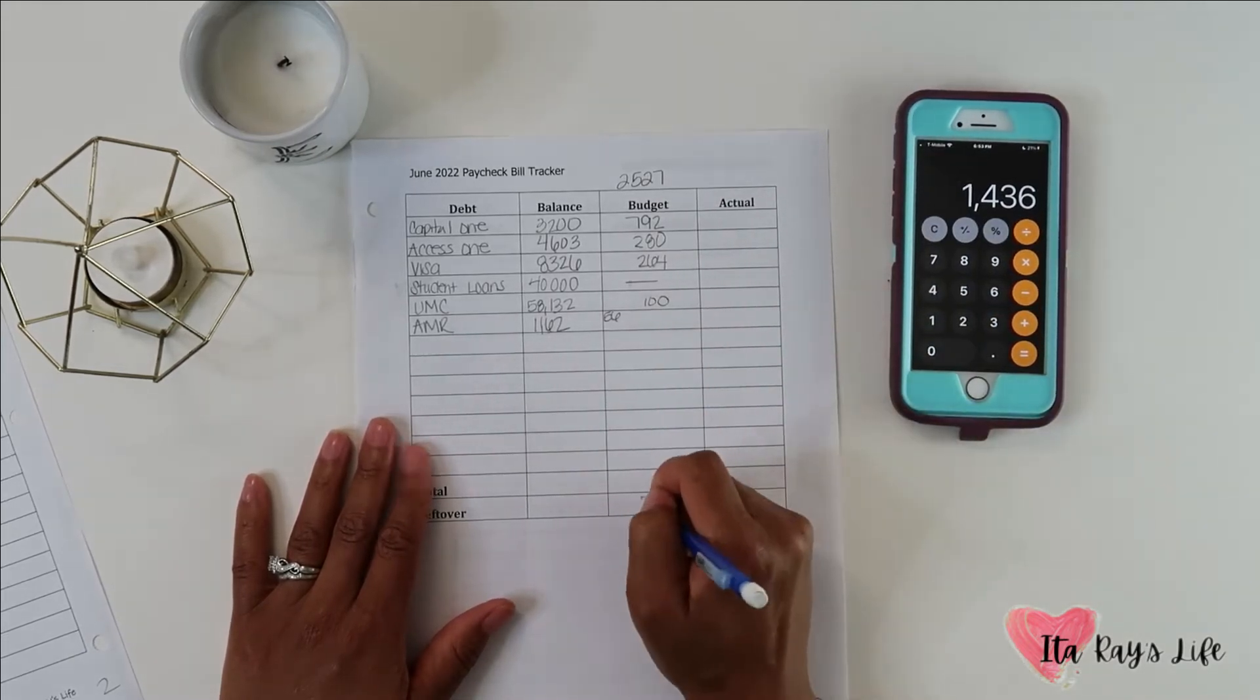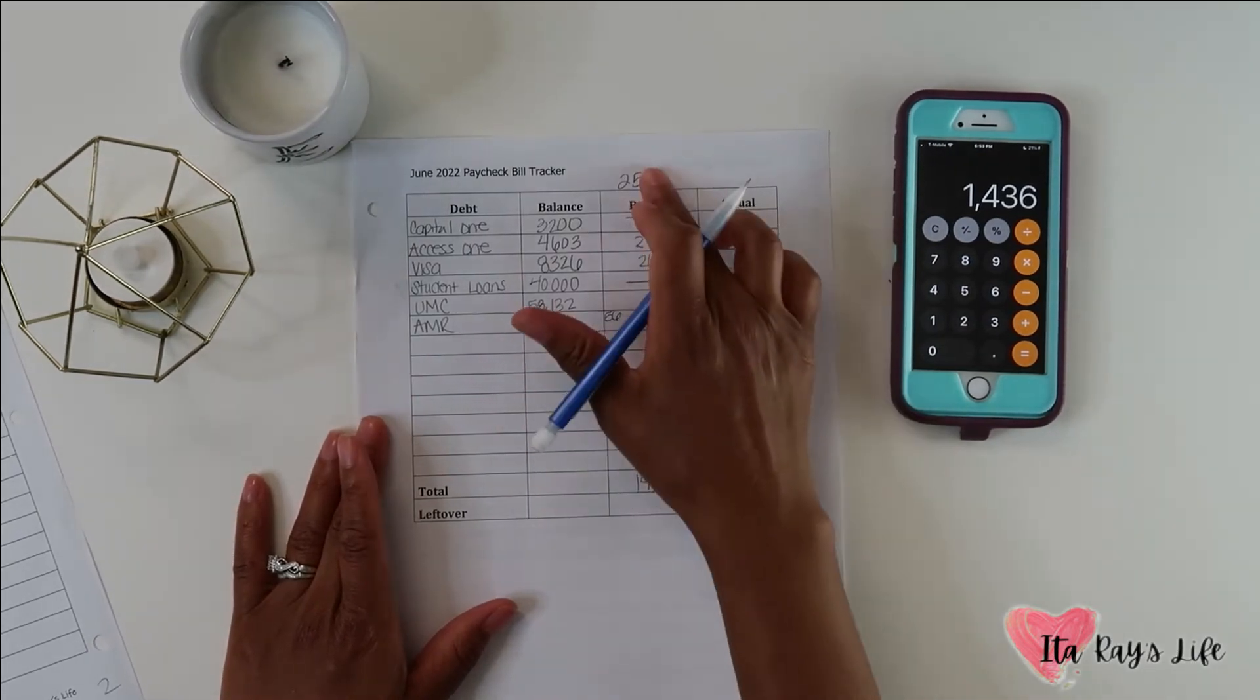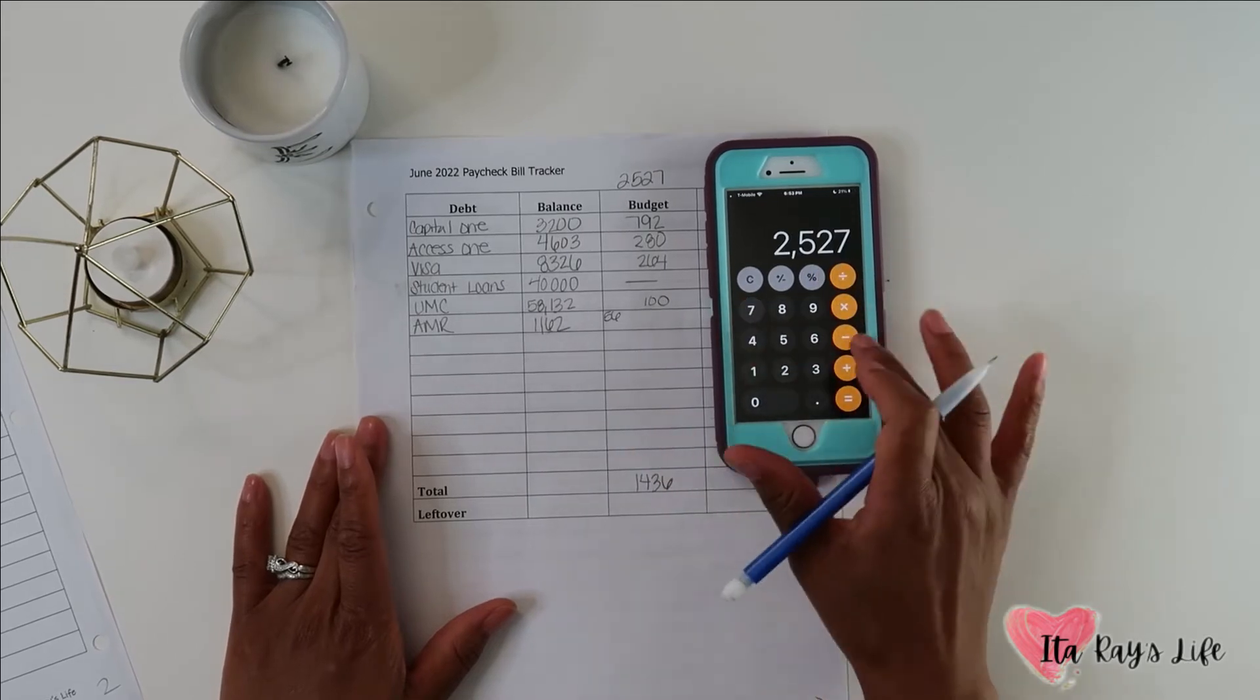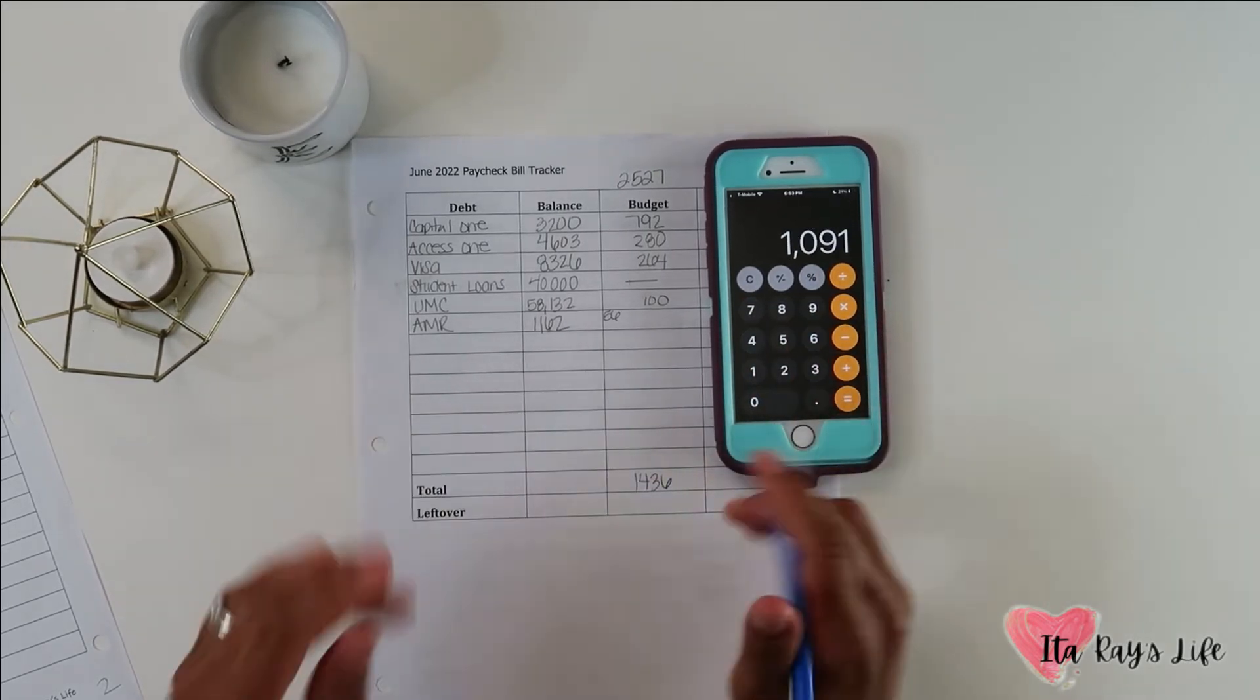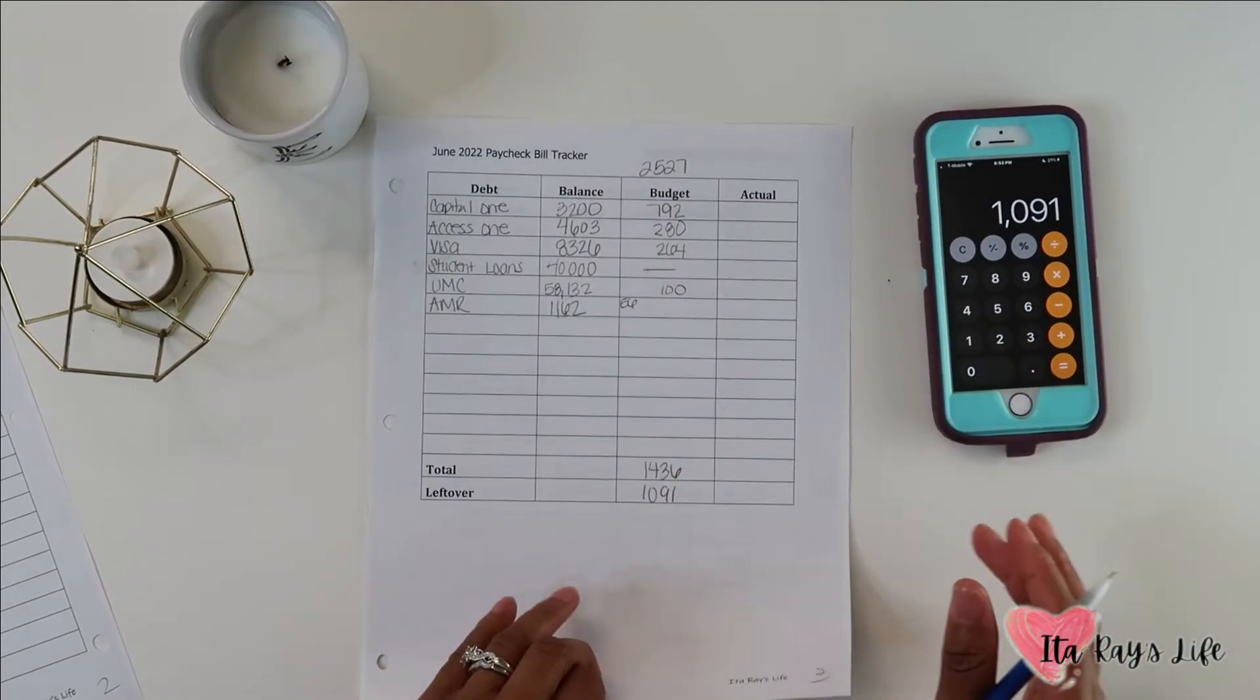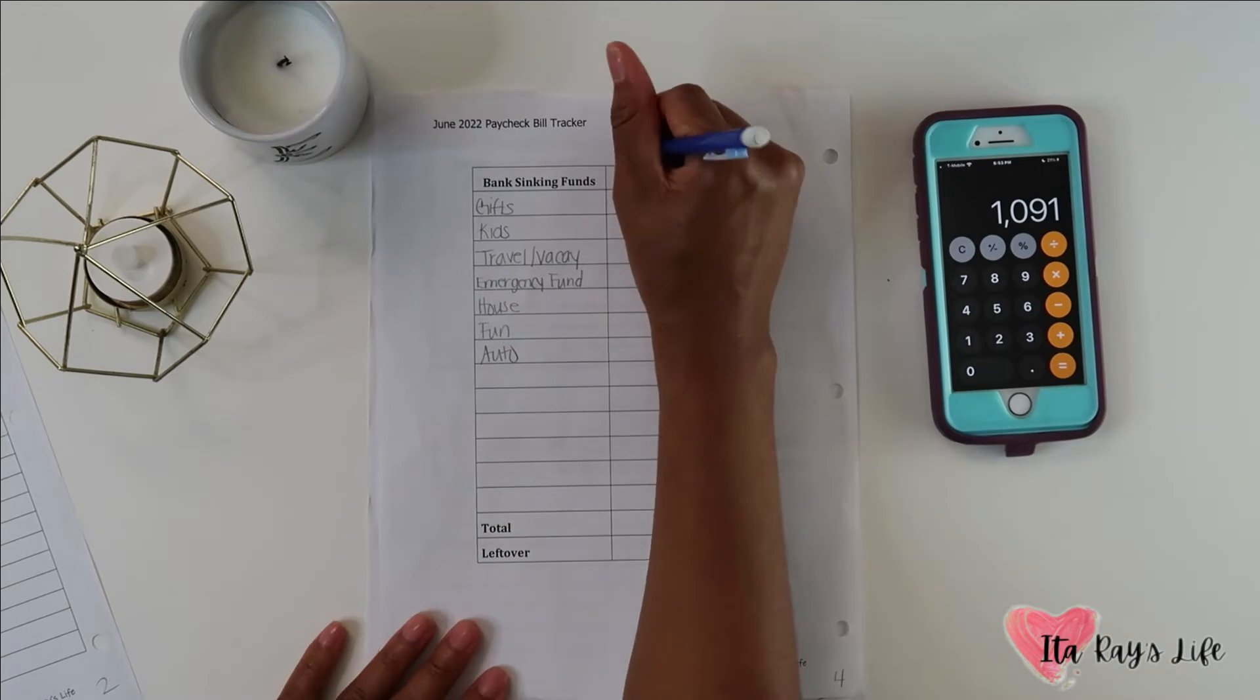That gives us a total of $1,436. Take that $1,436 and subtract it from the $2,527. That gives us a leftover of $1,091.